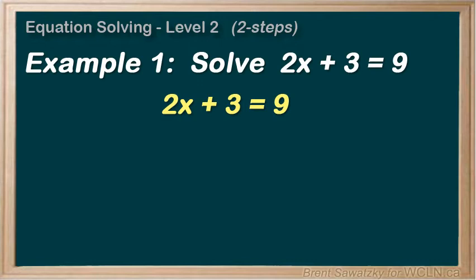We could actually deal with either of these first. Subtract the 3 or divide by the 2. One thing to note is that if we divide by 2 first, we have to divide everything by 2, including the 3 and the 9. So it's probably easier to subtract the 3 first. Generally, in a problem like this, it's easiest to deal with the additions and subtractions prior to the multiplications and divisions.